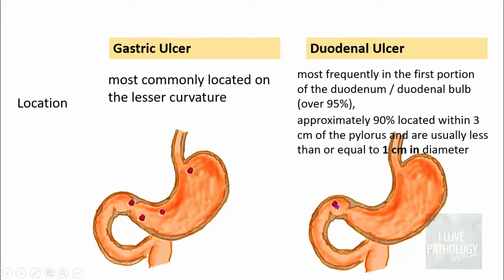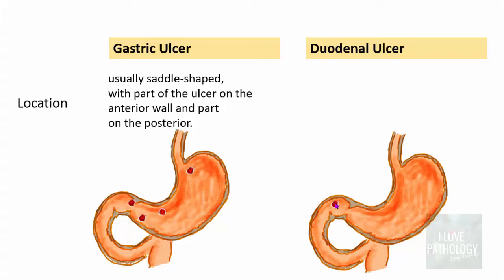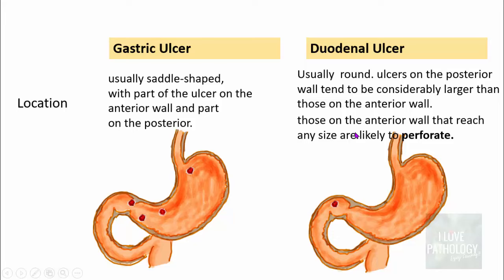If you look at the shape, gastric ulcers are usually saddle-shaped, with the ulcer spanning the anterior and posterior wall. Duodenal ulcers are usually round, and the ulcers on the posterior wall tend to be considerably larger than those on the anterior wall. This is because anterior wall ulcers, if they grow larger, are likely to perforate — which is why posterior wall ulcers tend to be larger.